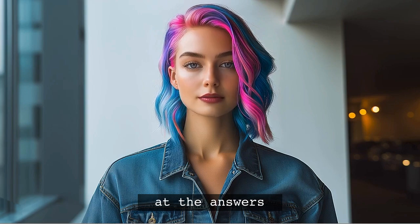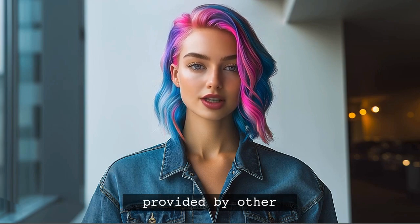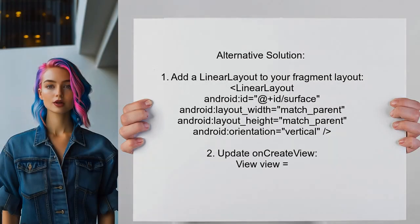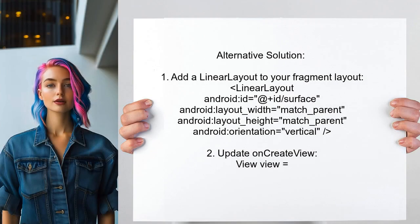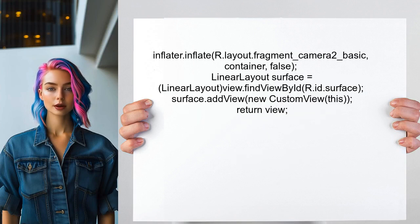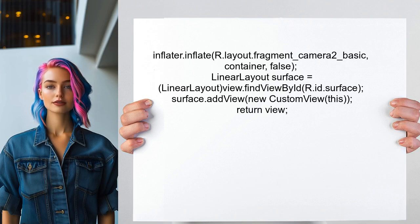Now let's look at the answers provided by other users. An alternative solution suggests adding a LinearLayout to your Fragment layout. This layout will contain both the Autofit TextureView and the FrameLayout. Then, in the OnCreateView method, inflate the layout and add the CustomView to the LinearLayout.